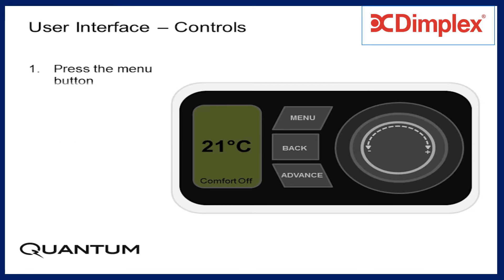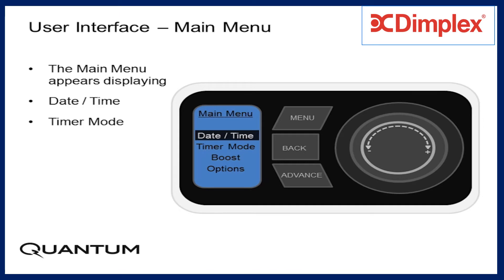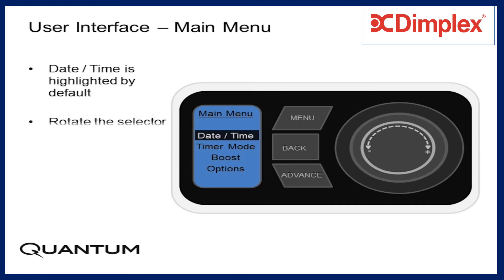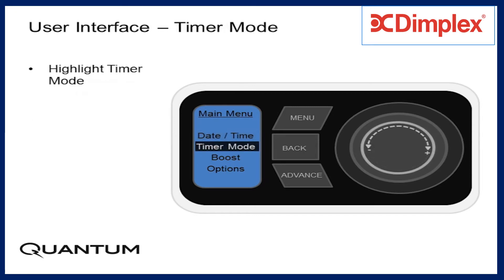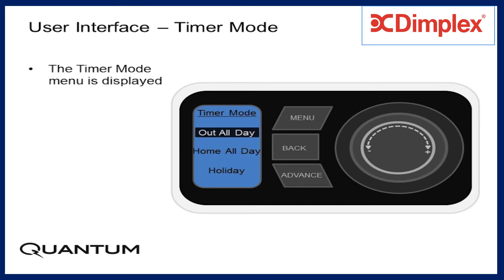Press the menu button. The main menu appears. Date and time is highlighted by default. Rotate the selector dial to highlight Timer Mode, and press the selector dial. The timer mode menu is displayed.